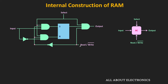Similarly, when the read-write signal is equal to 0, the output remains 0, but the output of the NOT gate is equal to 1. When the input is 1, S is 1 and R is 0, so a 1 will be stored in the SR latch. When the input is 0, S is 0 and R is 1, so a 0 will be stored. In this way, when the read-write signal is 0, the write operation is performed in the binary cell.